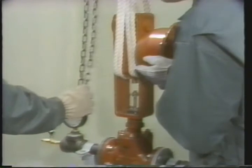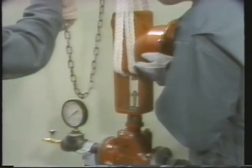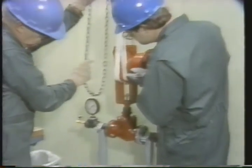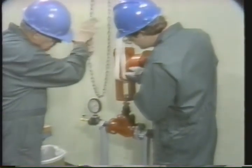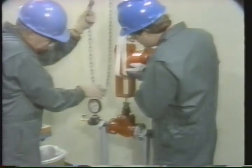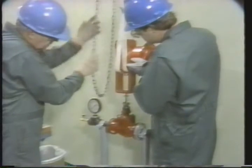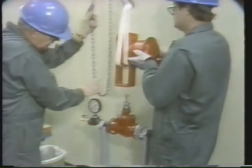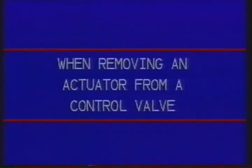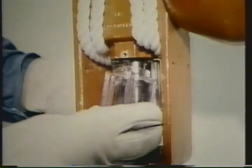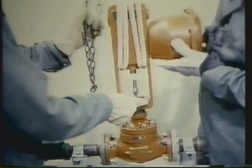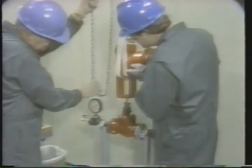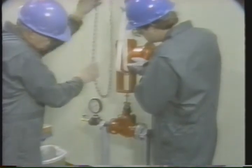This allows the technician to keep control of the hoist. As the technician continues hoisting to completely lift the actuator off the valve, he takes care to keep the movement steady and straight. It's important that the actuator clears the valve stem without damaging the stem. Scoring or other damage to the stem could affect the operation of the valve. Remember, some actuators have accessories that must be removed before hoisting the actuator off the control valve. Follow your facility's safety procedures for hoisting and lifting, and make sure that the actuator is lifted straight over the stem to prevent damage to the stem.